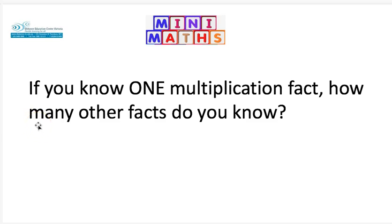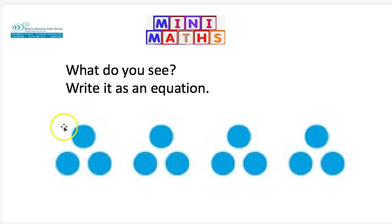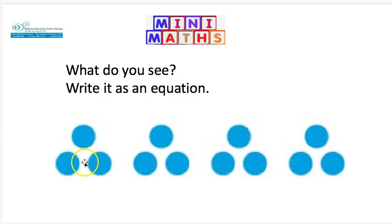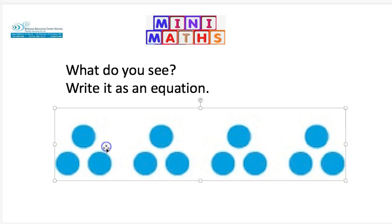So if you know one multiplication fact correctly, how many other facts do you know? Now I want you to notice that three groups of four, as we have here, is the same answer but a different arrangement. Here we have one group of three, two groups of three, three groups of three, and four groups of three.